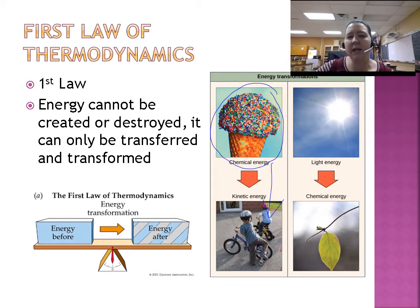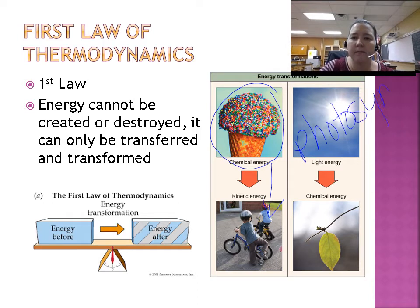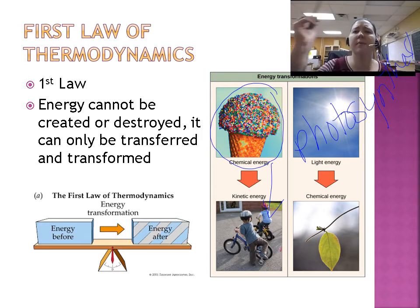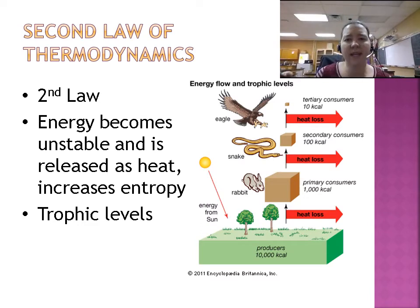Another transformation is photosynthesis: we take light energy and turn it into the chemical energy of glucose through the process of photosynthesis. That's the first law of thermodynamics — pretty straightforward.